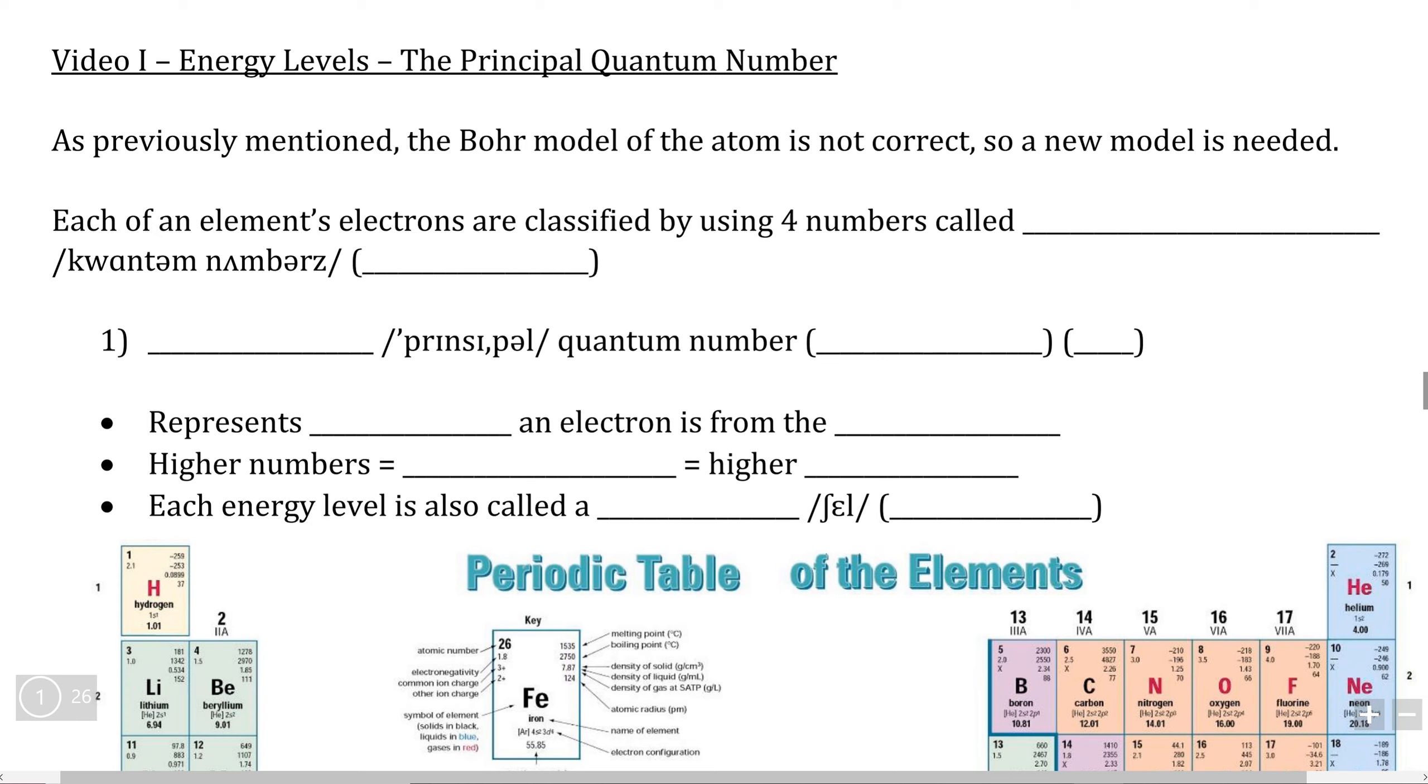Previously, we discussed how Bohr's model of the atom and of electron organization cannot be correct, so a new model is needed.